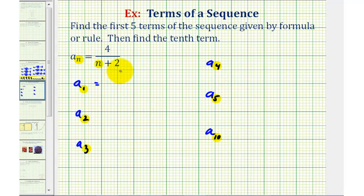So a sub one is going to be equal to four divided by, again, substituting one for n, we'll have one plus two, which means the first term would be four over three, or four thirds. Notice we substituted one for n to find a sub one, the first term.